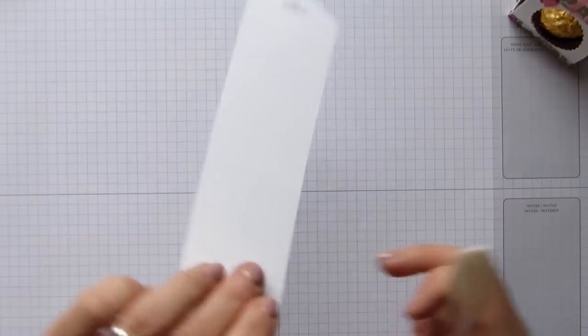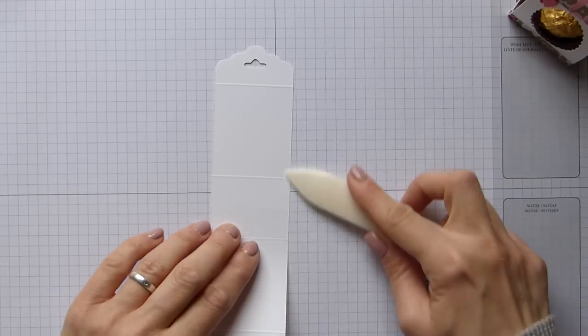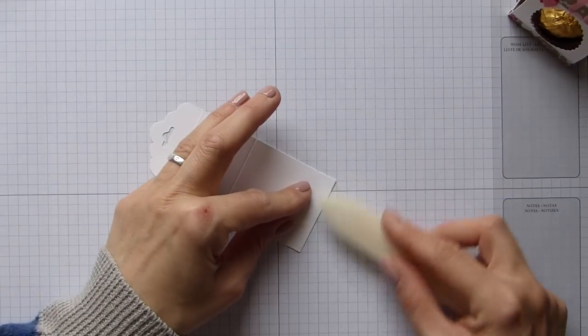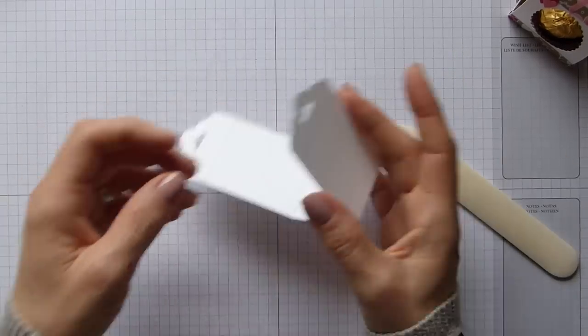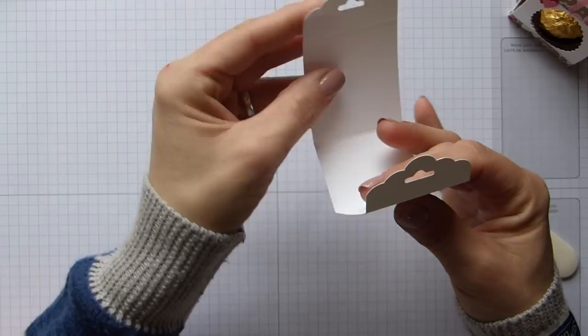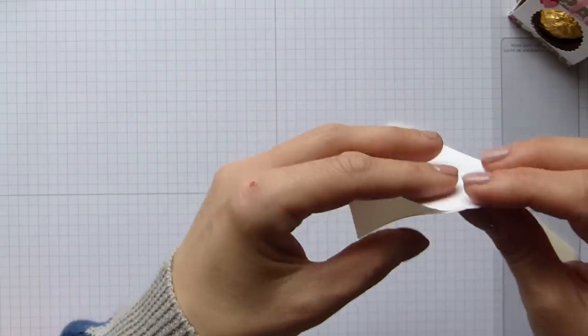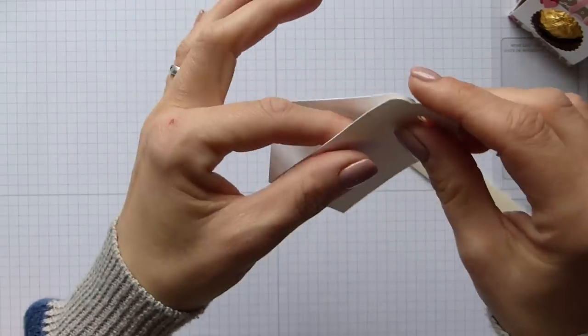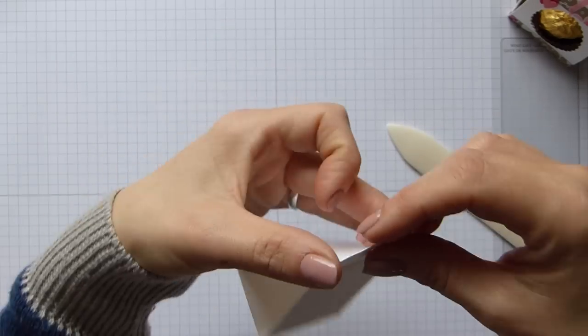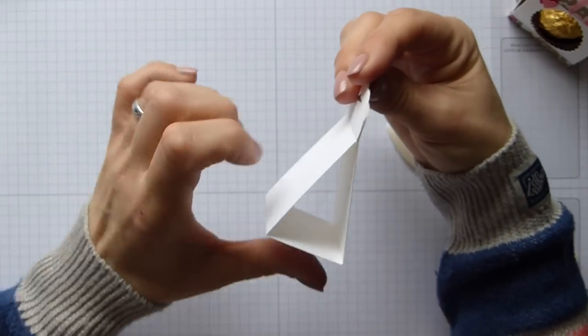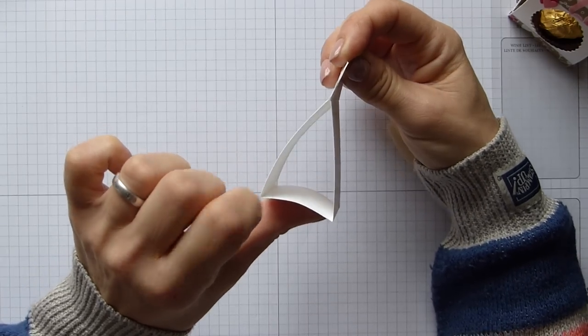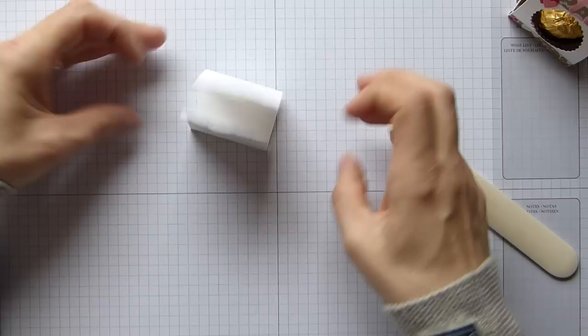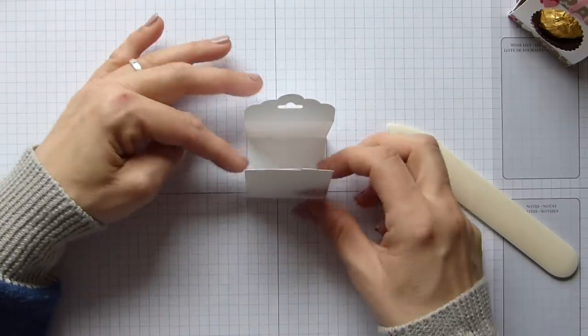So then we're just going to fold these two centre score lines here. Because the top ones actually will go the wrong way. Because they will go together, like so. And then once you've got your Ferrero inside, it will give it a slightly bulgier shape. So that's that part done. Super simple.